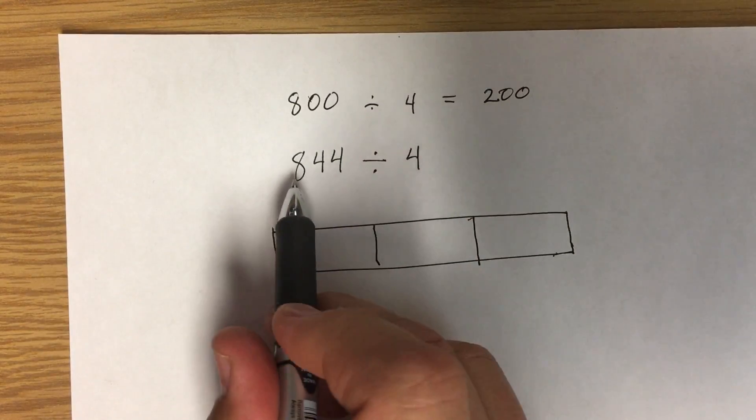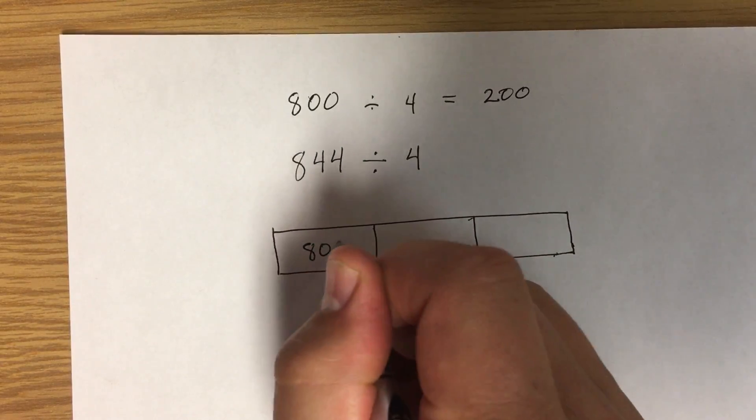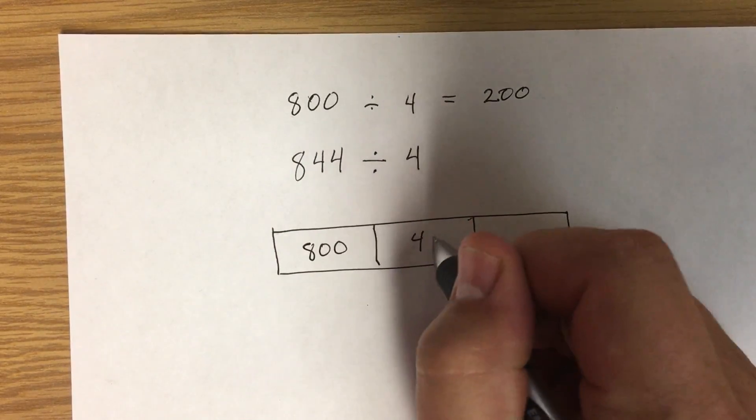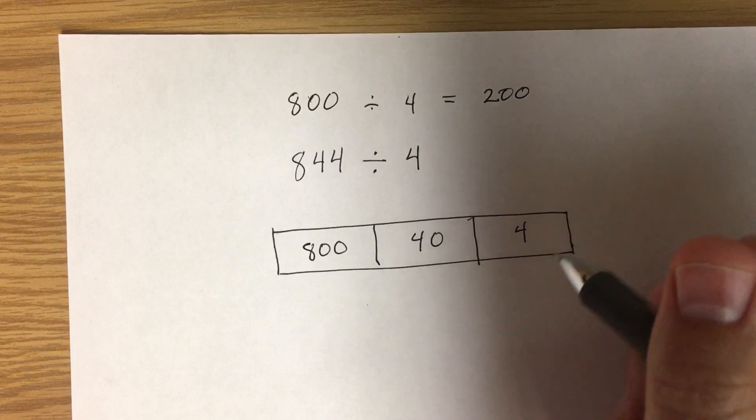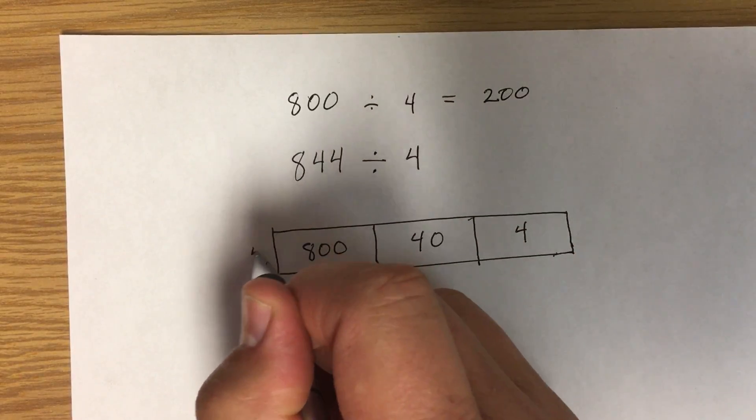So I'm going to split 844 to 840 and 4. And we're going to divide it by 4.